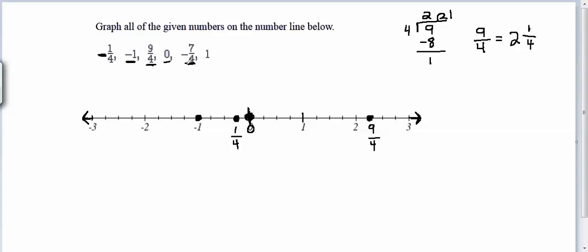We need to graph negative 7/4, and again, I think it's very helpful to convert it to a mixed number. So I can say negative 7/4 is going to be equal to negative some whole number. We don't know the whole number. And then a fraction. We know the denominator of the fraction will be 4, but we need to figure out what the whole number is and what the numerator is. So we ask ourselves, how many times does 4 go into 7? Well, it goes in one time completely, so the whole number is 1, and our remainder is 3, so we have a numerator of 3.